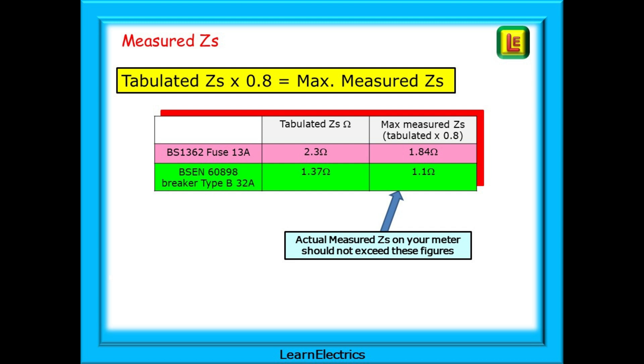For the 13 amp BS 1362 fuse, 2.3 multiplied by 0.8 is 1.84 ohms, and this tells us that our measured reading with our test meter should not exceed this 1.84 ohms in value. For a type B 32 amp BS EN 60898 circuit breaker or RCBO, 1.37 ohms multiplied by 0.8 is 1.1 ohms. Part of the circuit protected by this device should not exceed a measured value of 1.1 ohms.